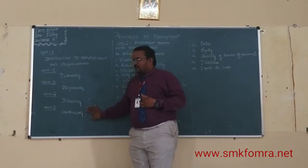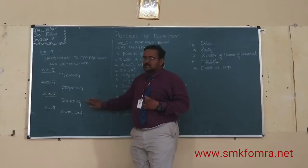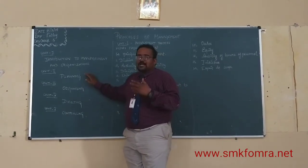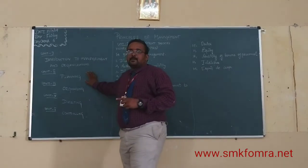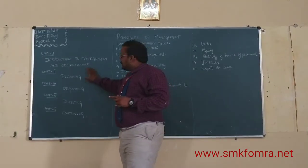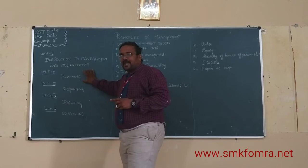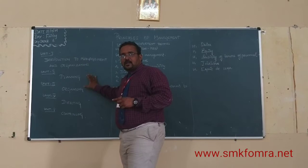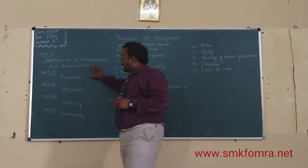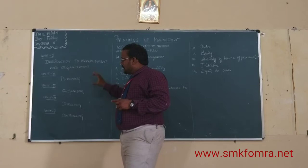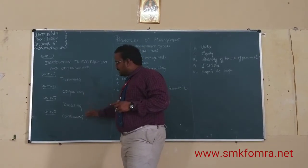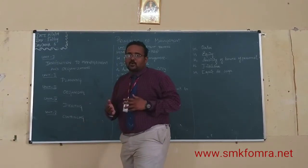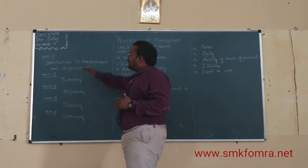In unit 5, we check whether the objectives planned back in unit 2 have been achieved. Whether I have achieved those objectives is assessed through something called controlling. With controlling, I can verify whether I have achieved my targets and take corrective action.